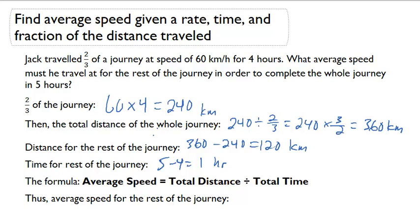Now I can use the formula average speed equals total distance divided by total time, and I can do 120 divided by 1 equals 120 km per hour.